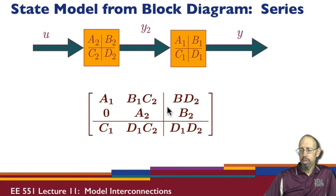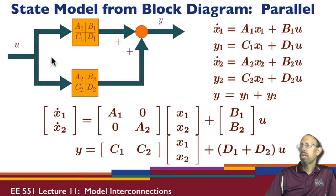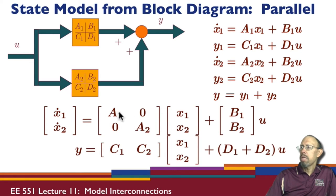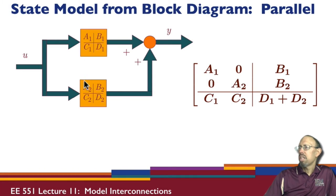What about parallel? In parallel, both systems receive the same input and the outputs of both subsystems combine to form the overall output. All state equations have the same input, and the output is the sum y1 plus y2. The combined state model has a block diagonal A matrix, the B matrices stack, the C matrices stack side by side, and the D matrices add. We can write the ABCD matrices directly from the original state models.